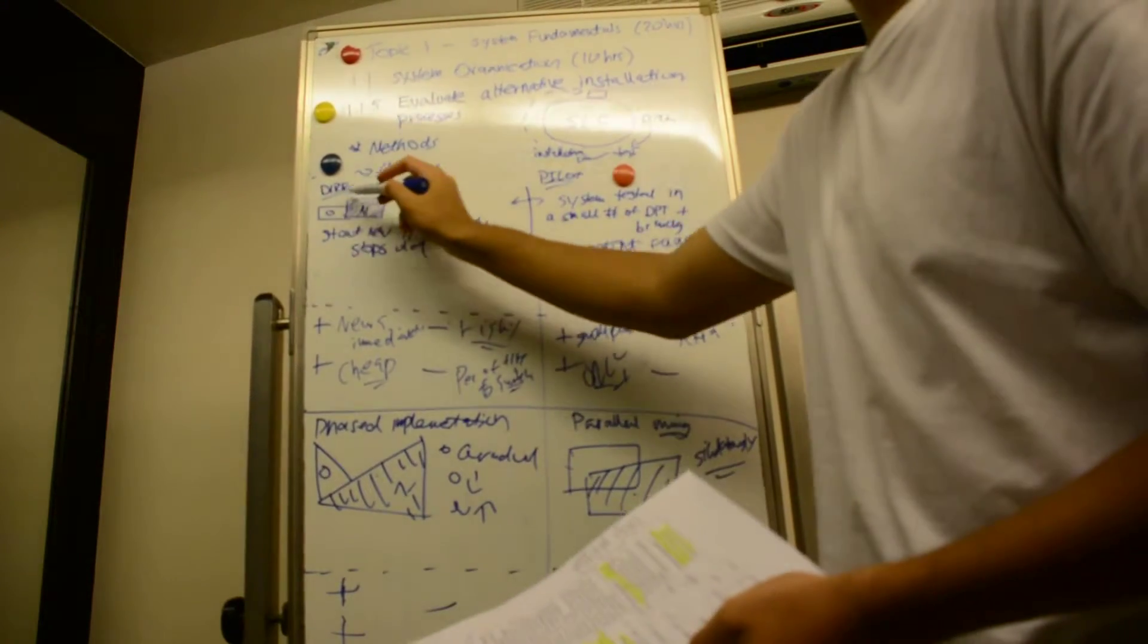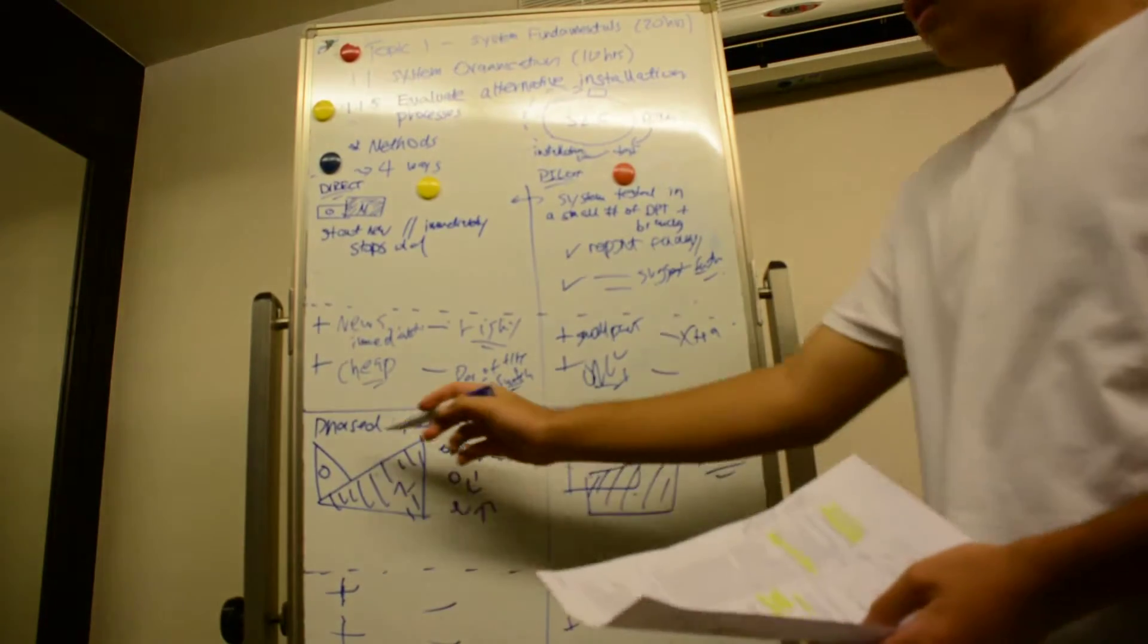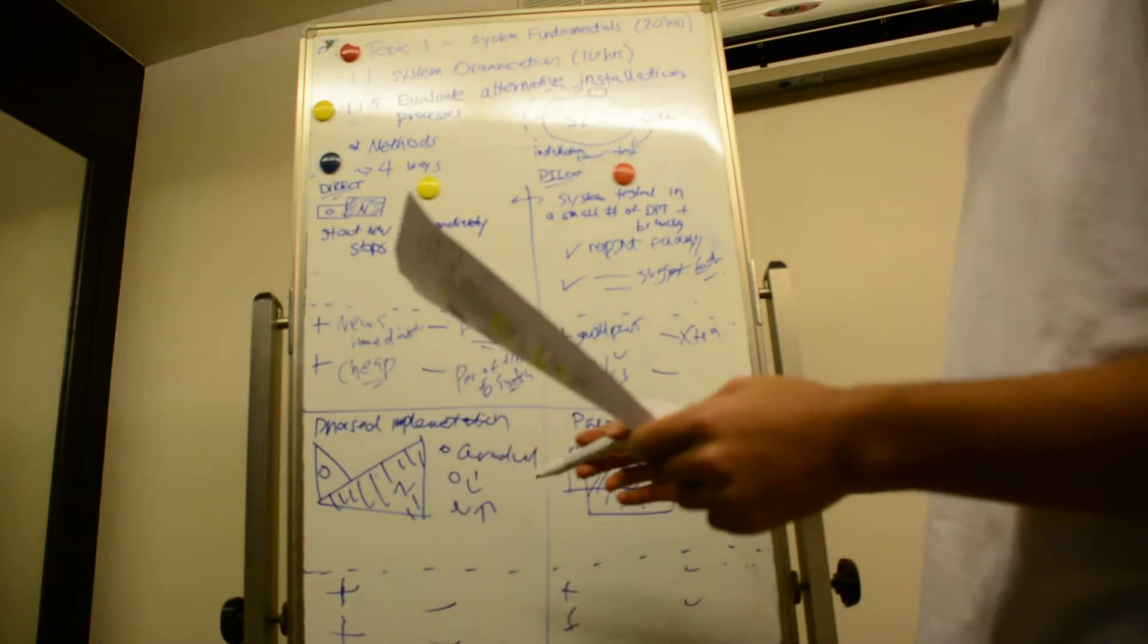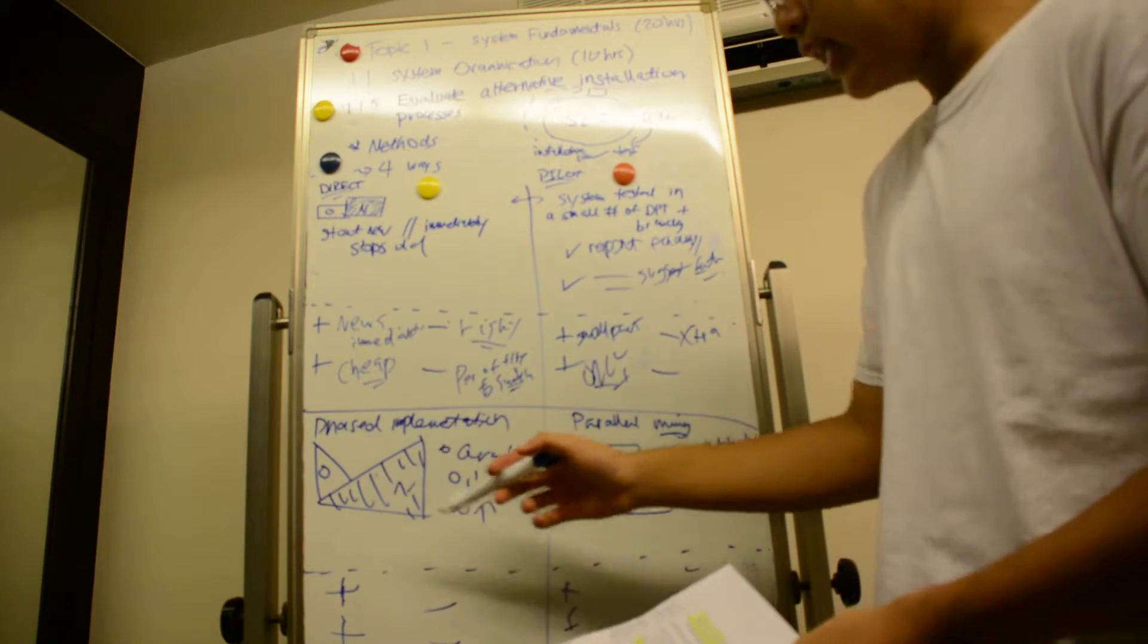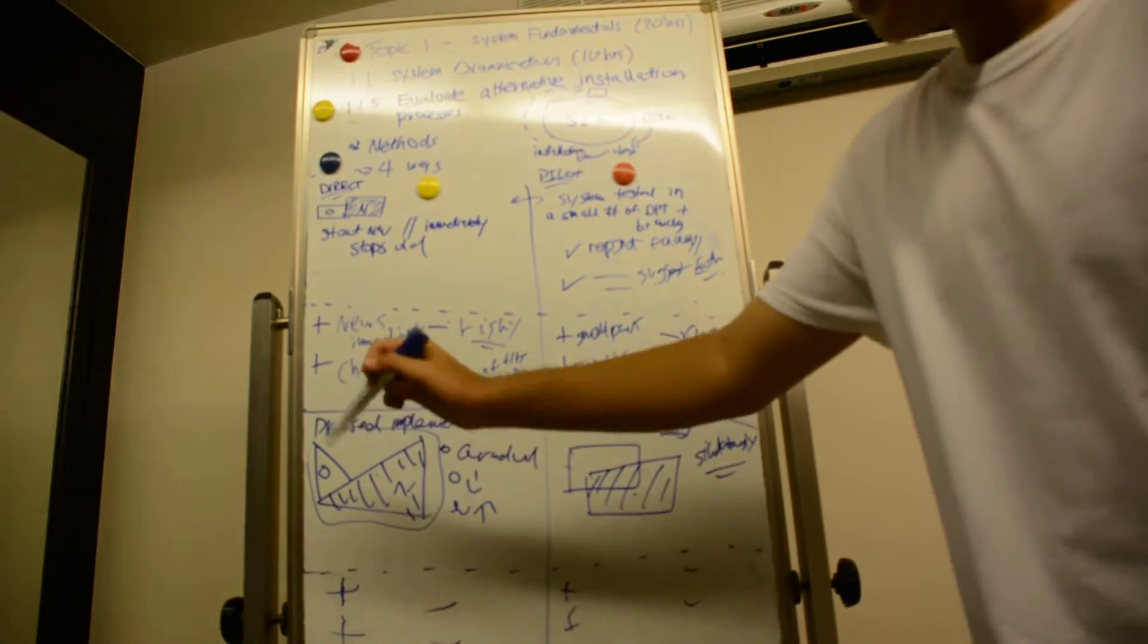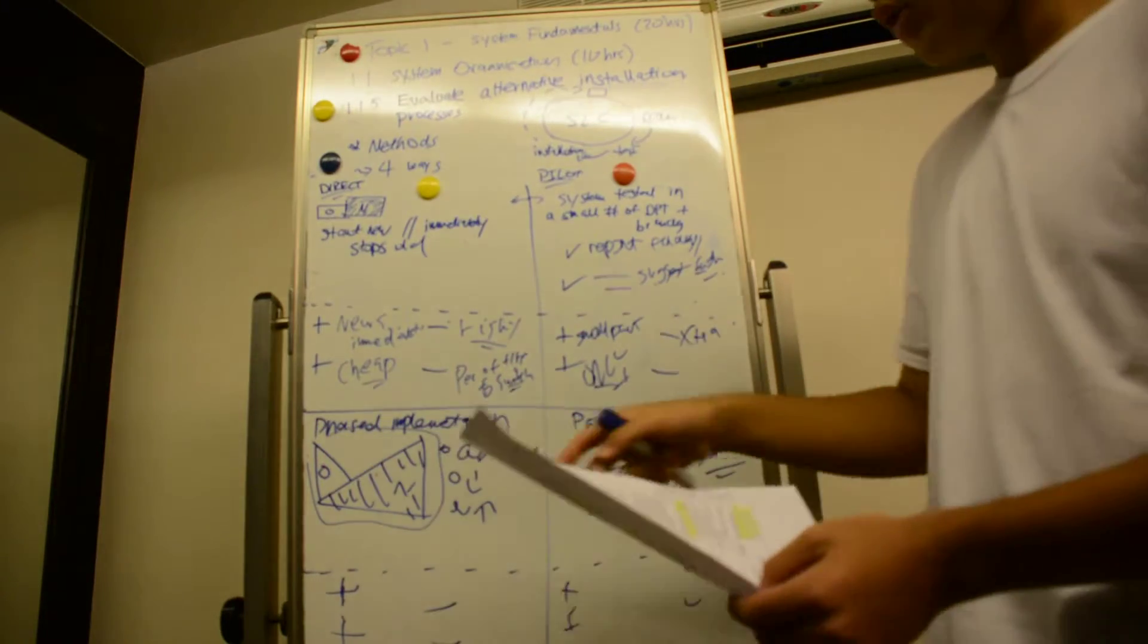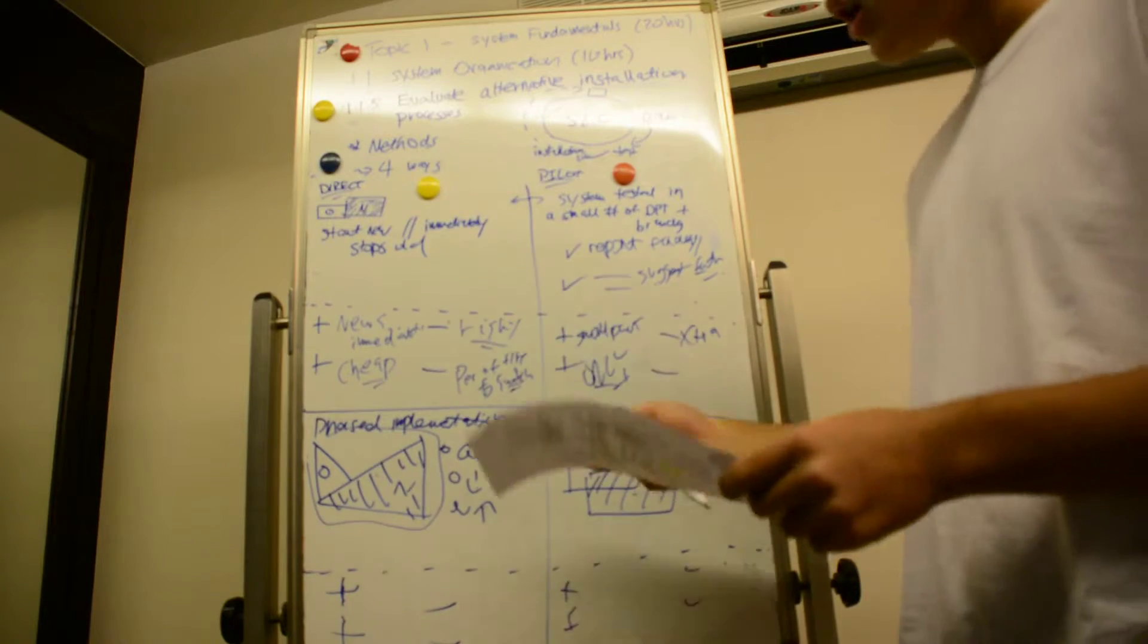The third method is called phased implementation. This means a gradual reduction in the use of the old system while gradually increasing the new system. As this diagram explains, it's phased from old to new: gradual reduction and gradual increase. This is a common method and fairly easier compared to the other ones, as it's obviously less risky.